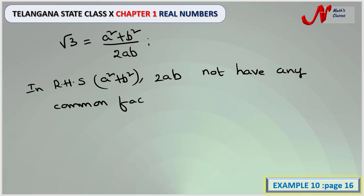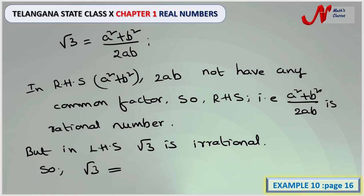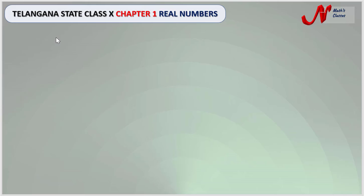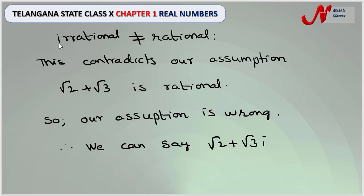In the RHS, the numerator a² + b² and denominator 2ab do not have any common factor, so a² + b² / 2ab is a rational number. But in the LHS, √3 is irrational. So √3 ≠ a² + b² / 2ab — an irrational number cannot equal a rational number. This contradicts our assumption that √2 + √3 is rational. So our assumption is wrong, and therefore we can say √2 + √3 is irrational.